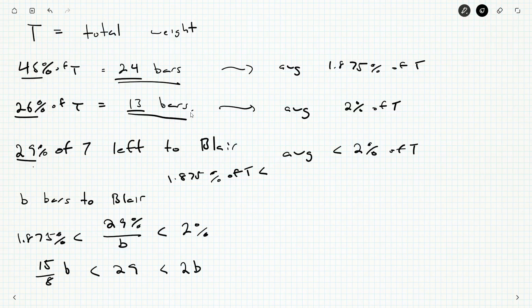Now, taking each of these inequalities separately, we get 29 needs to be less than 2B. So dividing by 2 on both sides, B needs to be greater than 14.5.